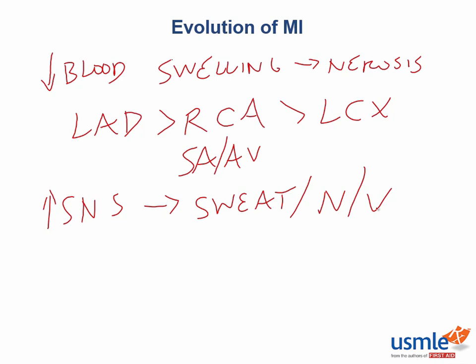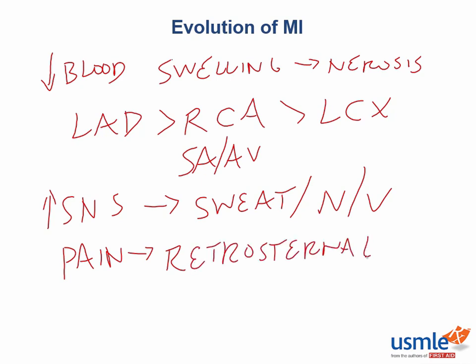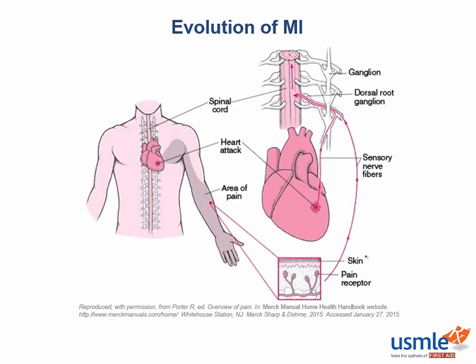The pain is going to be described as retro-sternal, behind the sternal wall, because that is where the ischemic myocardium is located. The referred pain classically describes pain radiating into the arm. This occurs because the afferent sensory fibers from the heart and from the skin of the arm both use the same dorsal root ganglion in the C7 to T5 distribution. The brain can misinterpret the afferent pain signals from the heart as also coming from the arm.